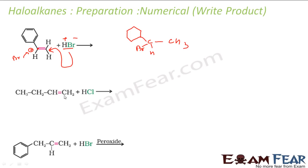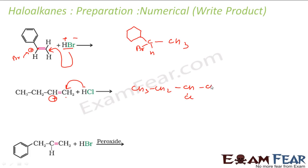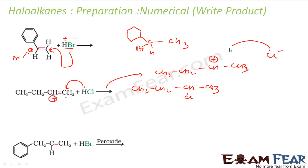Let us say HCl. Here also, first H will attack — this position or this position. If it attacks this position, you get a more stable secondary carbocation. If it attacks the other carbon, you get a primary carbocation. So H will attack the carbon that gives the secondary carbocation. So you get CH3-CH2-CH(Cl)-CH3 as the product. The intermediate carbocation was CH3-CH(+)-CH3 and then Cl− attacked this position to give that product.